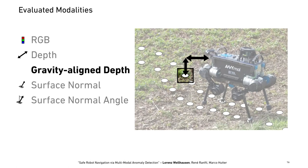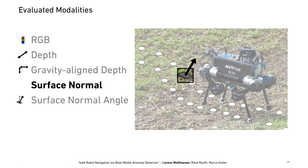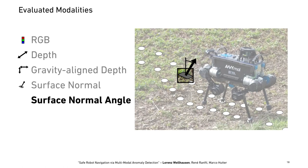We also explicitly give the network access to the surface normal, which we compute from the depth image in the gravity-aligned frame. We further process the surface normal by computing the angle between the vertical and the computed surface normal, giving a single value that encodes the inclination of the terrain.